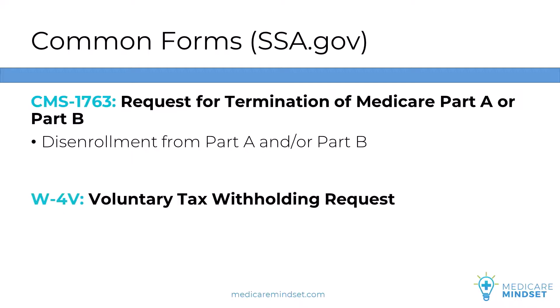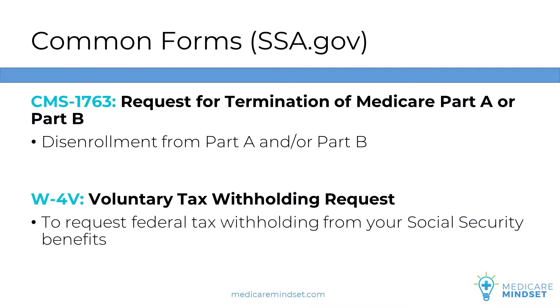Form W-4V is the Voluntary Tax Withholding Request. This is used when you want to have federal taxes withheld from your Social Security benefits.